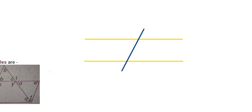When a transversal intersects two lines, there are a total of eight angles formed — four on one side and four on the other. These angles are of several types, and I will tell you each of them.